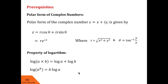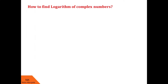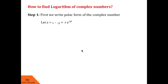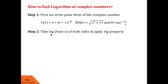Now let us see how to find out log of a complex number. In step 1, we first write the polar form of the complex number. Say the complex number z = x + iy, then its polar form is r·e^(iθ), where r = √(x² + y²) and θ = tan⁻¹(y/x). In step 2, we take log on both sides and then apply log properties.